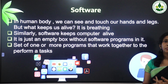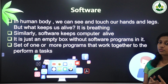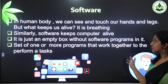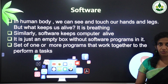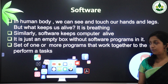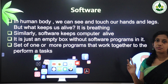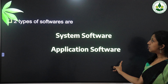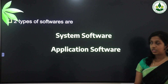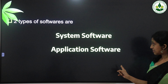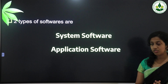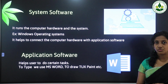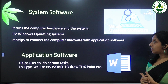Software is a set of one or more programs that work together to perform a task. Without software, a computer doesn't work — software keeps the computer alive. There are two types of software: system software and application software.